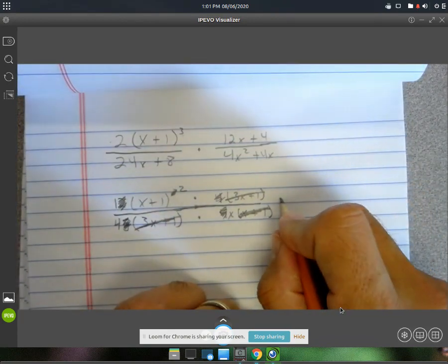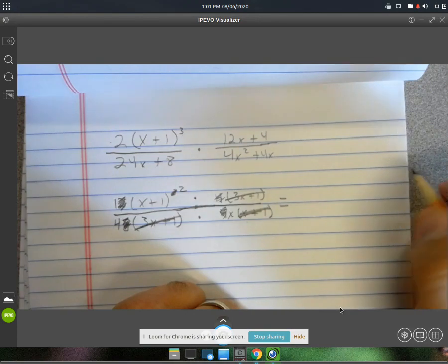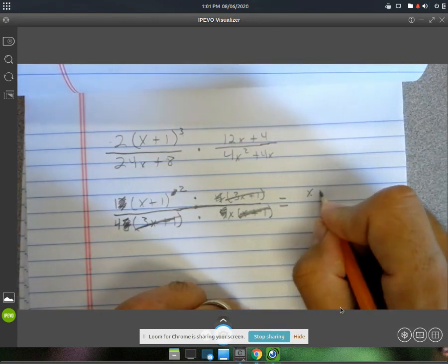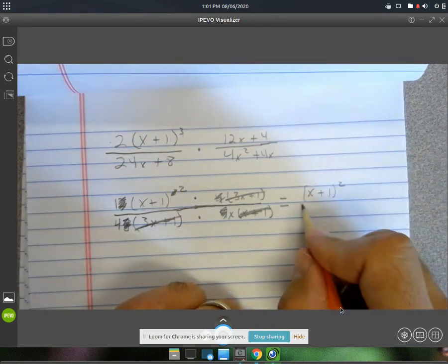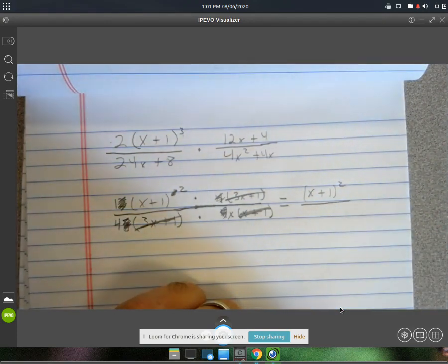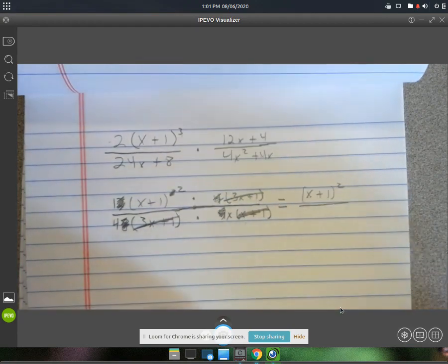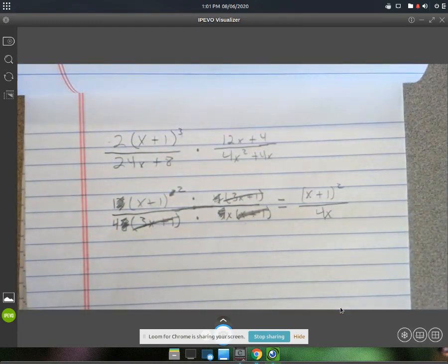We'll just multiply out the rest. So we're going to have nothing but x plus 1 squared on top. And then on the bottom, we'll have a 4 and an x. And that's it.